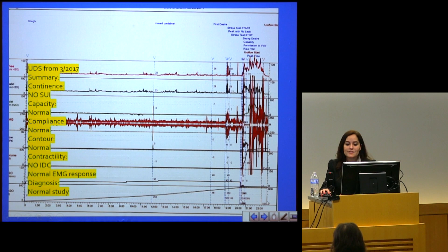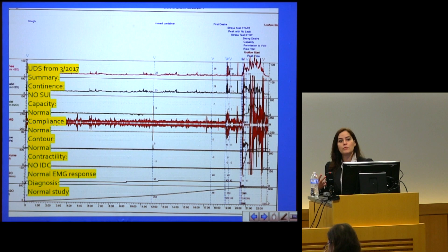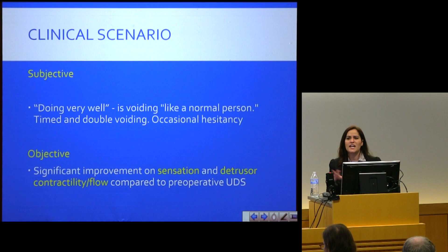Now, this is her postoperative urodynamics — two things changed. Her capacity is now 500 mLs, suggesting her sensation improved, so she feels the urge to void earlier. And look at her flow here — what a difference. She came back to the office and said, 'I can urinate like a normal person.' She still has occasional hesitancy, but she empties her bladder well. She's very grateful, and her other neurological symptoms improved as well.